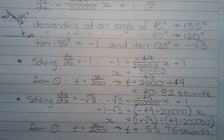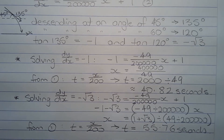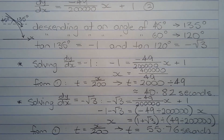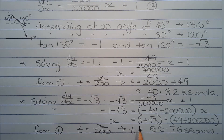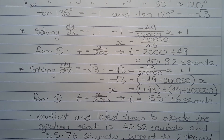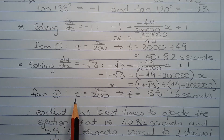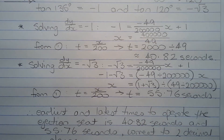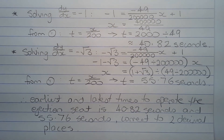Solving dy/dx equals negative square root of 3 (corresponding to 60° descent, i.e. 120° to the positive x-axis): negative square root of 3 equals negative 49 over 200,000 times x plus 1. Solving for x, then substituting into t equals x over 200, we get t equals 55.76 seconds, correct to two decimal places. Therefore, the earliest and latest times to operate the ejection seat are 40.82 seconds and 55.76 seconds, correct to two decimal places.